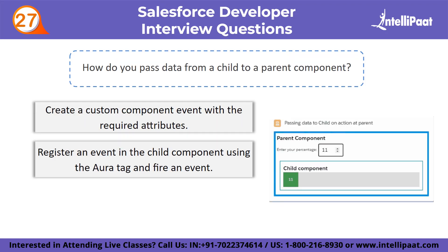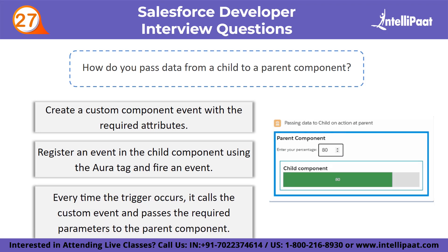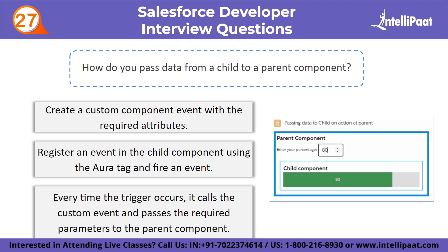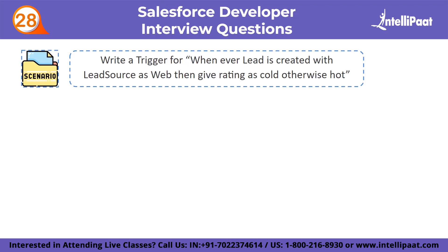Next question: how do you pass data from a child to a parent component? The first step is to create a custom component event with the required attributes to facilitate communication between the child and the parent components. Register an event in the child component using the Aura tag and fire an event using a trigger like button onclick or onchange of input text. Every time the trigger occurs in the child component, it calls the custom event and passes the required parameters to the parent component.